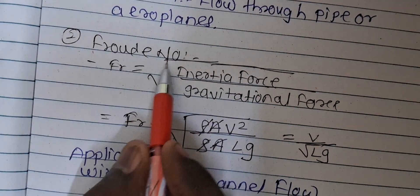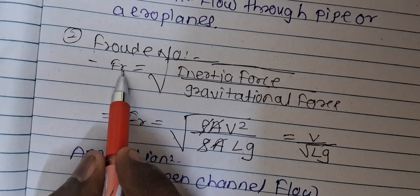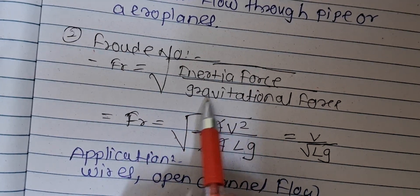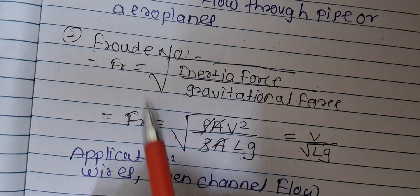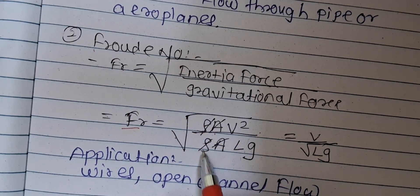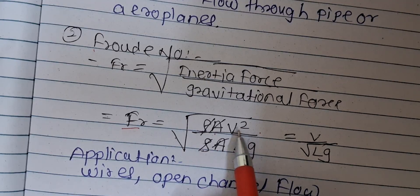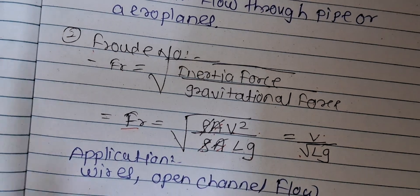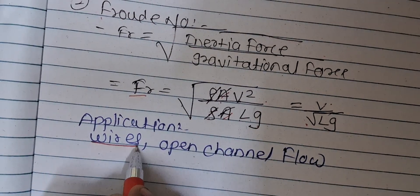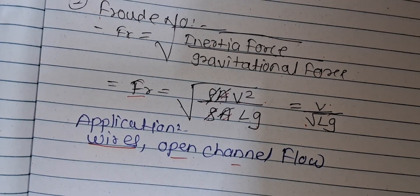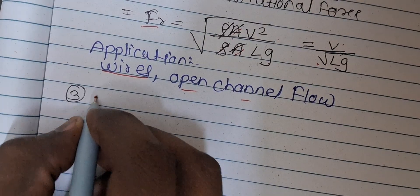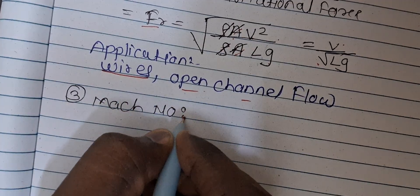To summarize the Froude number: it is the square root of inertia force to gravitational force. Formula: Fr = √(ρAV² / ρALg) = V / √(Lg). Application is for weirs and open channel flow. The third definition is the Mach number.